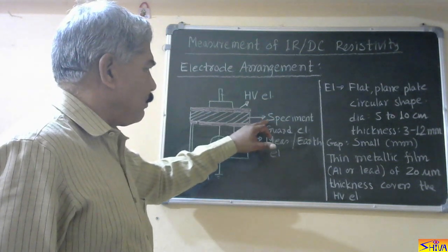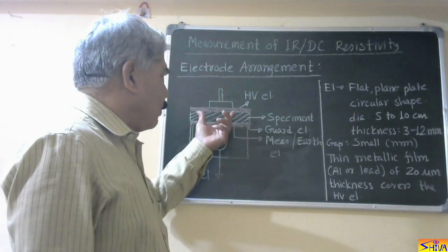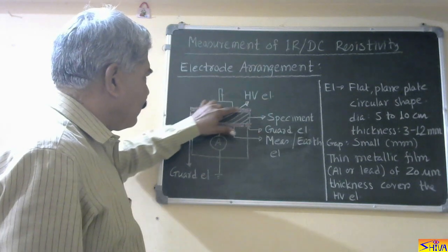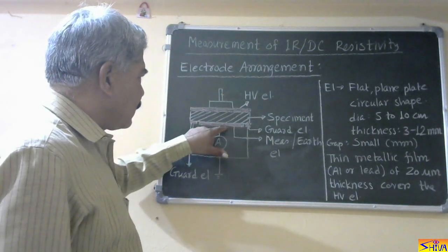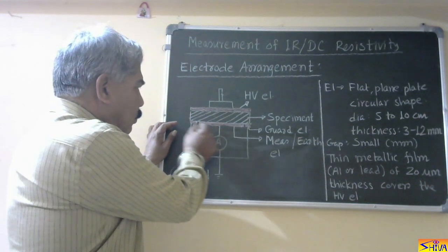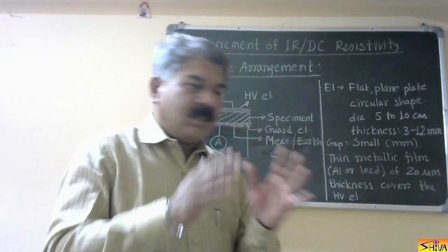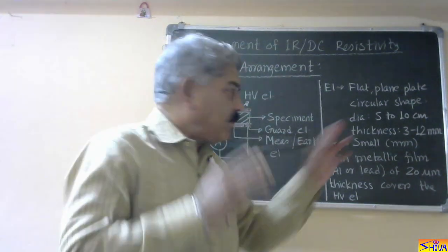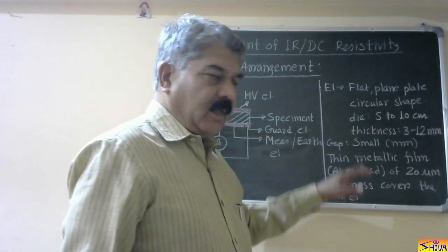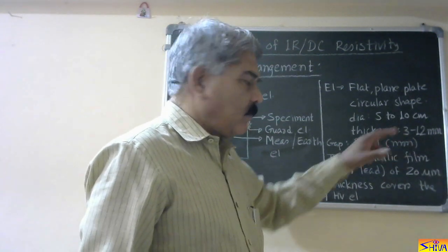The specimen is normally in a circular shape because the electrodes are also circular. There are three electrodes: the upper one is the high voltage electrode; the inside electrode is called the measuring electrode or earth electrode; and surrounding the measuring electrode is the guard electrode. The electrodes are circular plate shaped, with diameter 5 to 10 centimeters and thickness 3 to 12 mm.